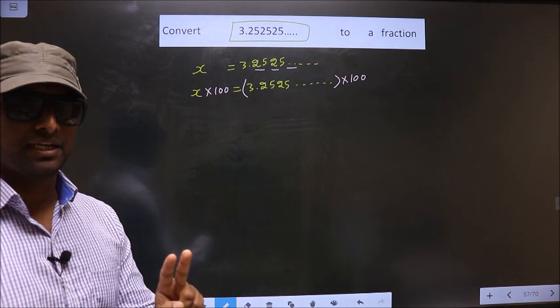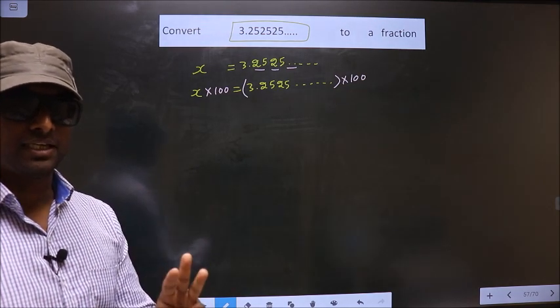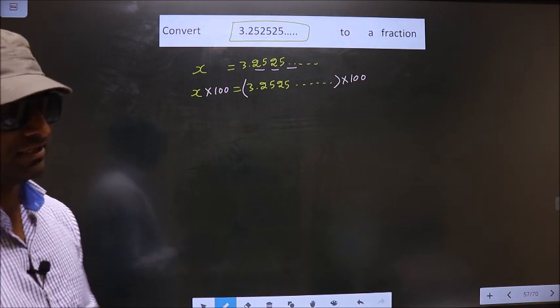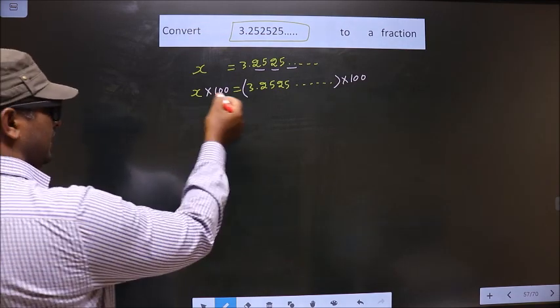Had it been three numbers being repeated, you should multiply by 1000.